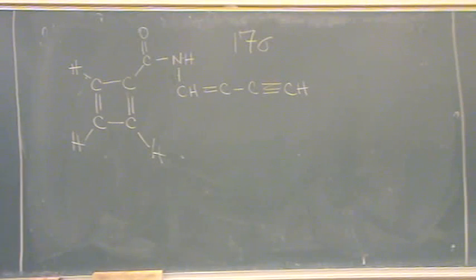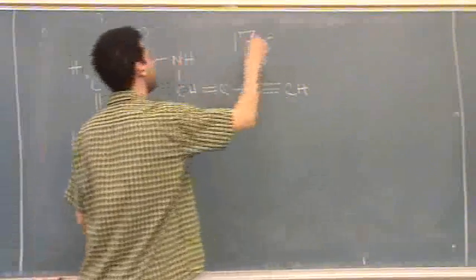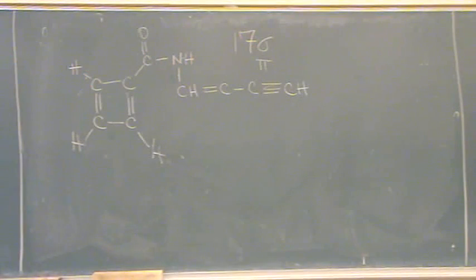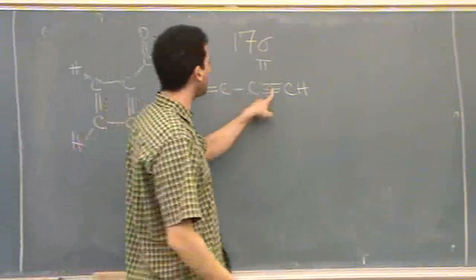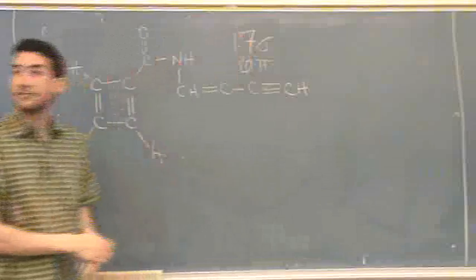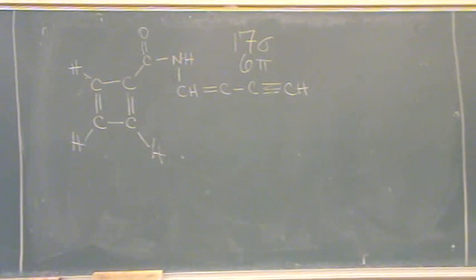Okay. So seventeen sigma bonds. That's just adding up all the total bonds. Pi bonds. How many pi's? Five. One, two, three, four, five, six. One, two, three, four, five, six. Okay.